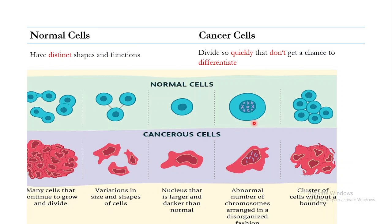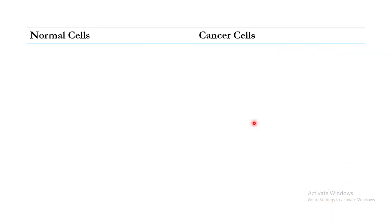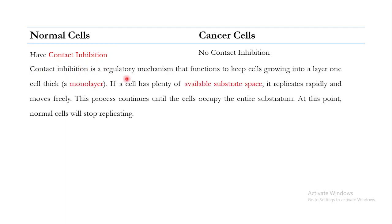Another important difference is that normal cells follow a phenomenon known as contact inhibition, while cancer cells do not. Contact inhibition is a regulatory mechanism present in normal cells. Its function is to keep cells growing into a single layer, or monolayer. If you provide plenty of available substrate space to normal cells, they replicate rapidly and move freely.